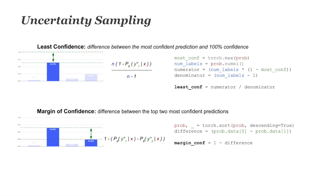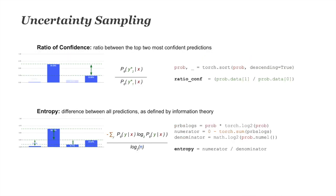Margin of confidence looks at the difference between the top two most confident predictions — here 64% and 23% — normalized for the maximum possible difference. Related to this, ratio confidence looks at the ratio between the top two most confident predictions rather than the difference. We don't need to normalize this because the smaller divided by the larger is already in the 0-to-1 range. Ratio confidence is more mathematically motivated than taking the difference, but is rarer in the academic literature mainly because these methods predate current machine learning algorithms.